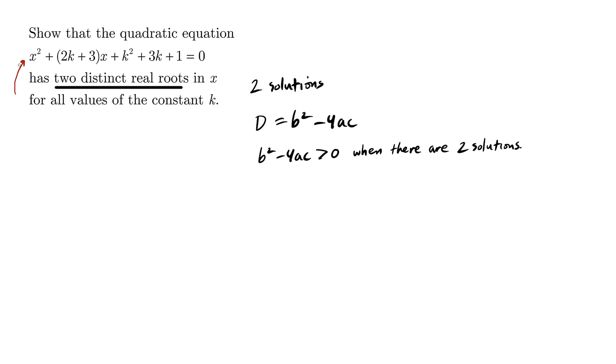So here is our a value, a is 1, this here is our b value, b is equal to 2k plus 3.